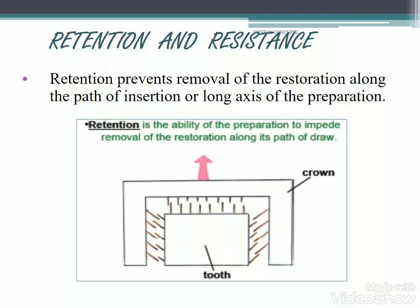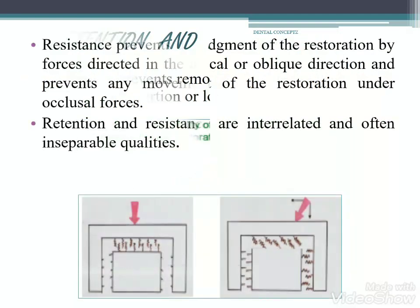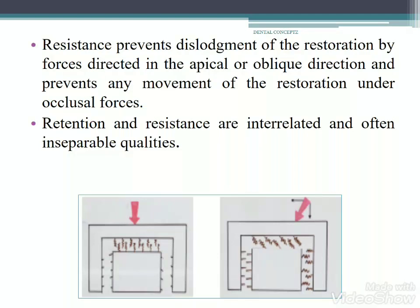The next principle is retention and resistance. Retention prevents removal of the restoration along the path of insertion or long axis of the preparation. Retention is primarily provided by two opposing walls of a restoration, as in intracoronal restorations like inlays. Resistance prevents dislodgement of the restoration by forces directed in the apical or oblique direction and prevents any movement of the restoration under occlusal forces. Retention and resistance are interrelated and often inseparable qualities.